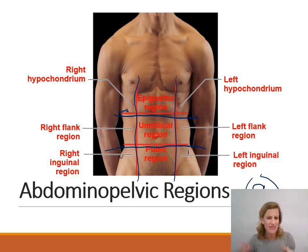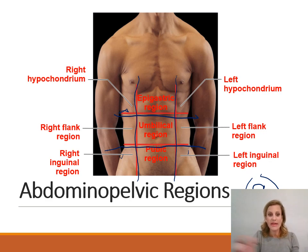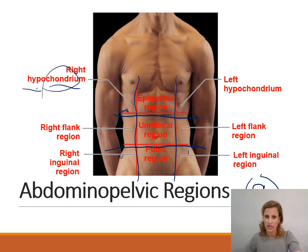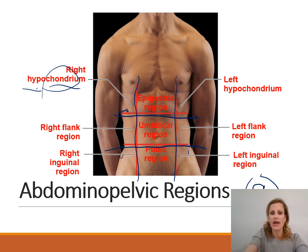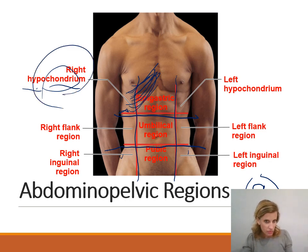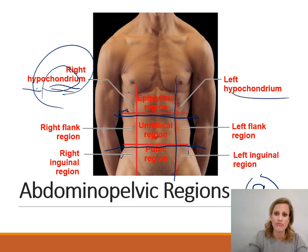Naming them — these names all kind of make sense, though you may not be able to decipher all the word roots yet. Right and left are self-explanatory — crisscross, so the patient's right and left. Hypochondrium: hypo means below, and chondro refers to cartilage, so this literally means below the cartilage. The ribs have costal cartilage connecting them to the sternum, so this region is below that cartilage. We have the right hypochondrium on the right and the left hypochondrium on the left.